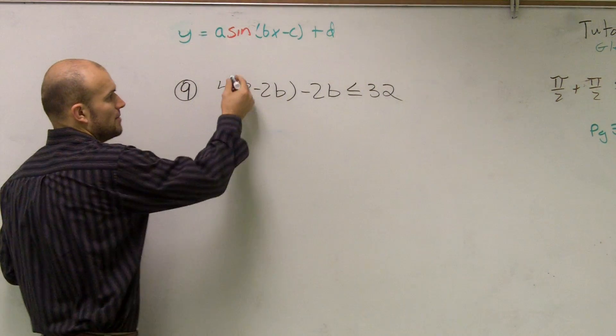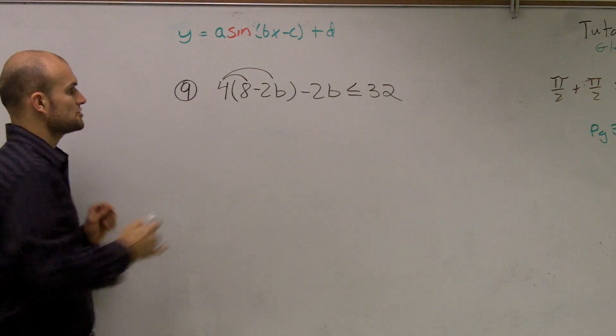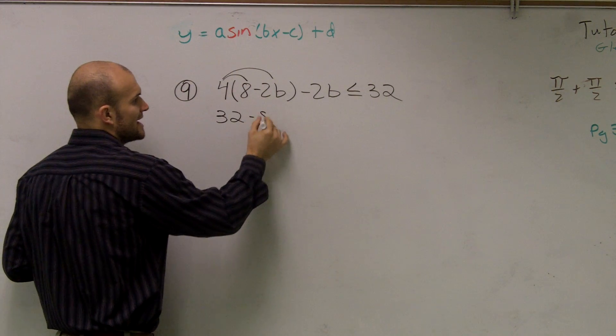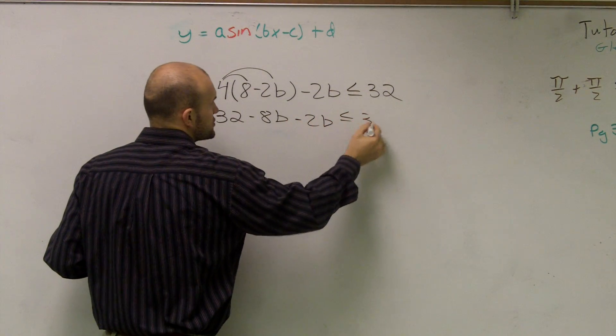Therefore I have 4 times 8, which is 32. 4 times negative 2b is going to be negative 8b minus 2b, less than or equal to 32.